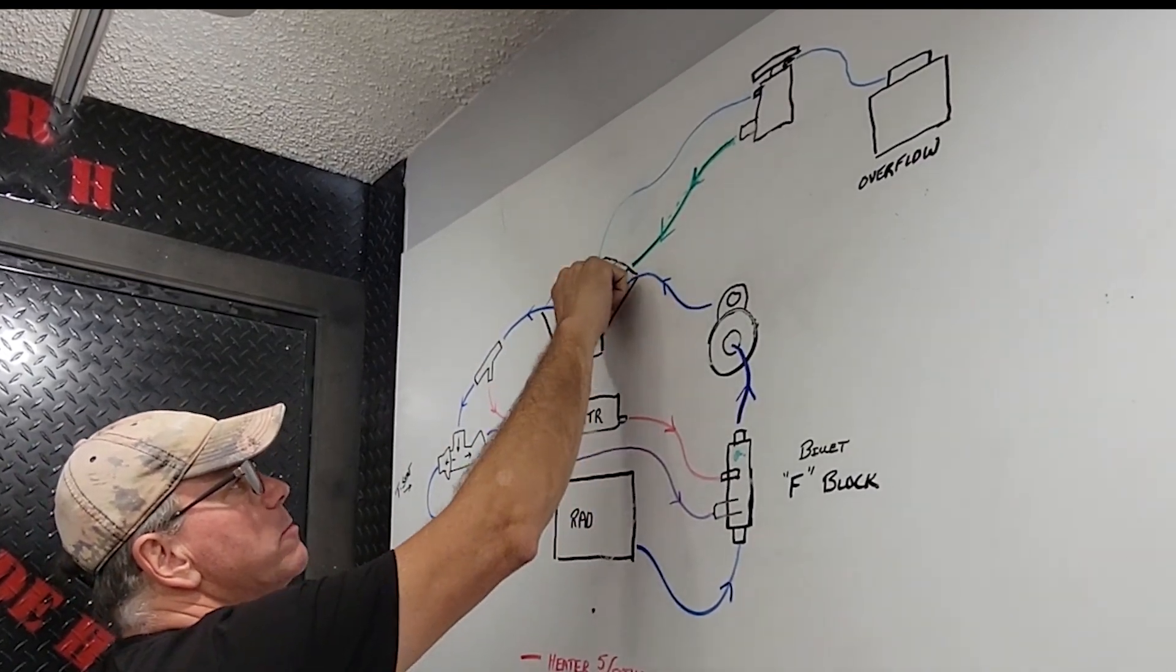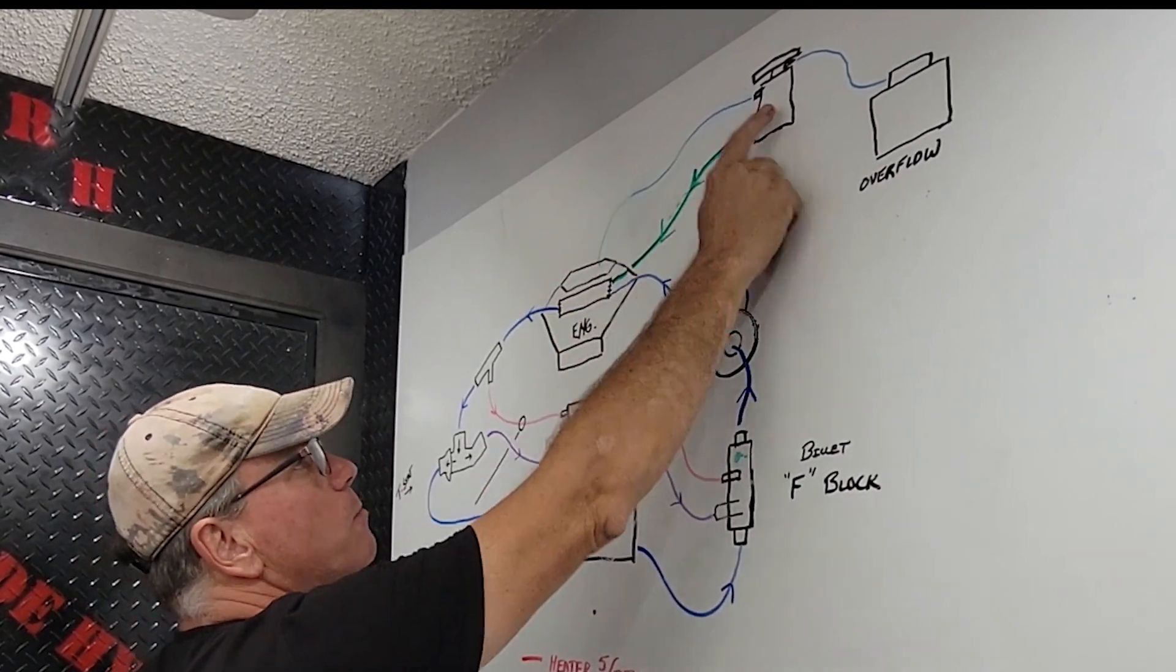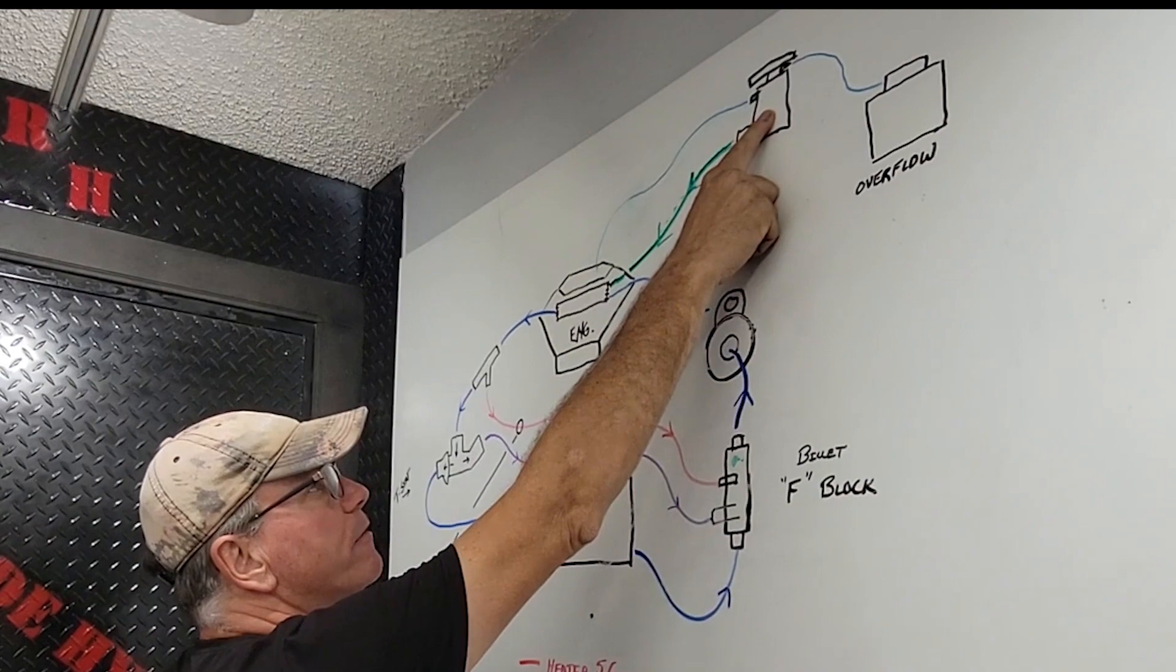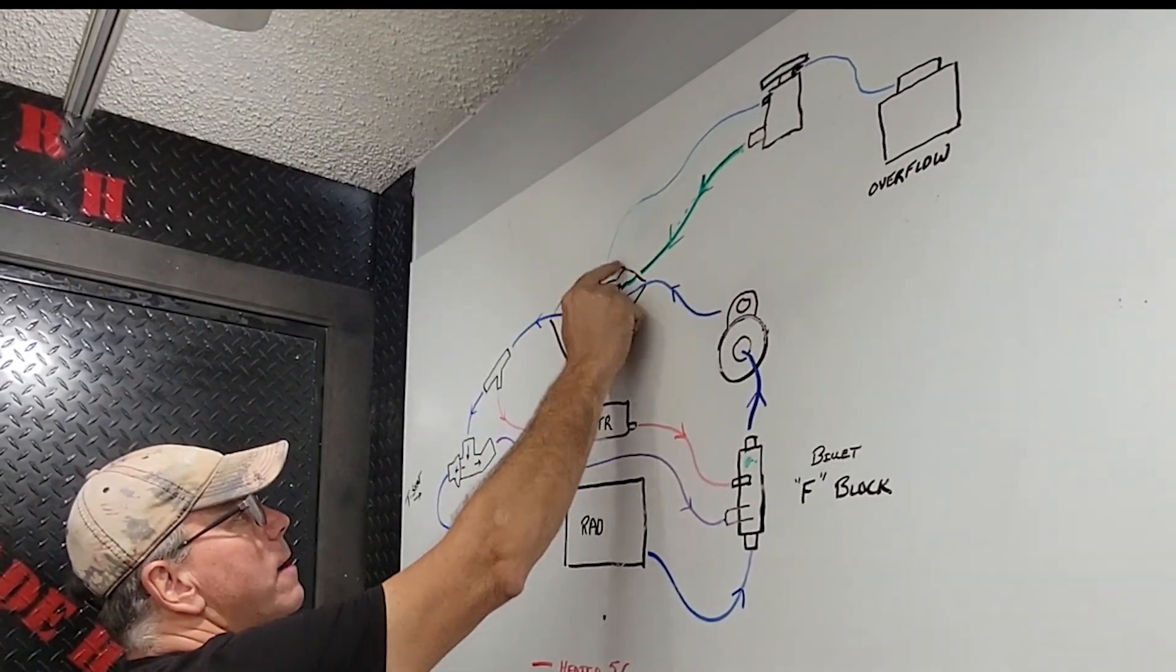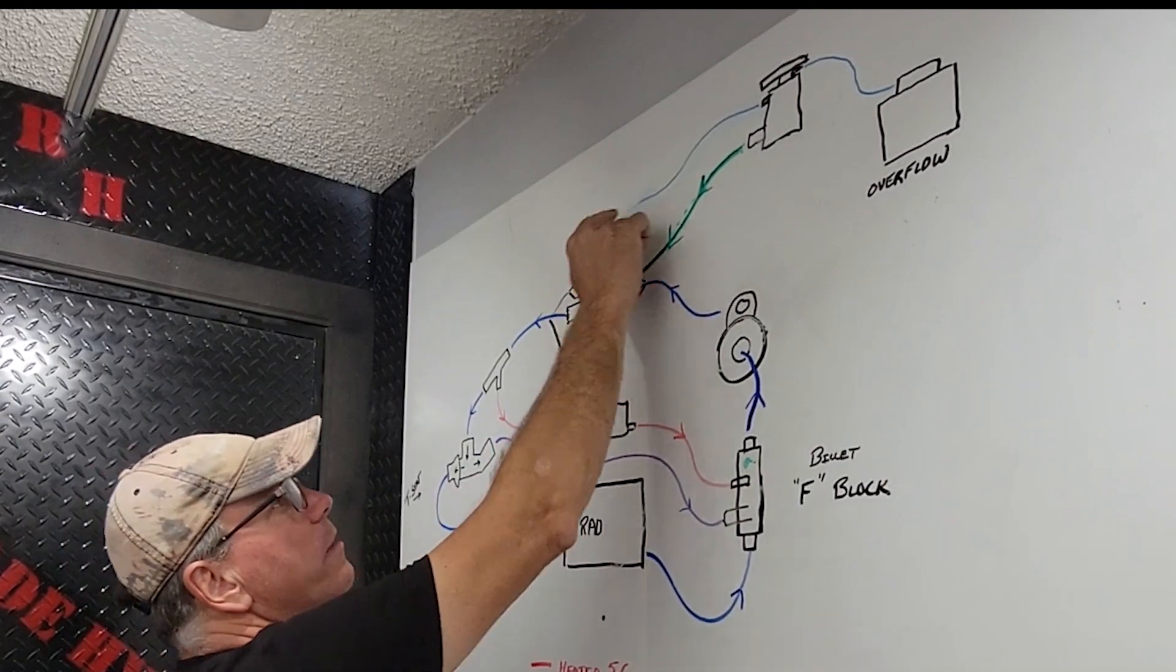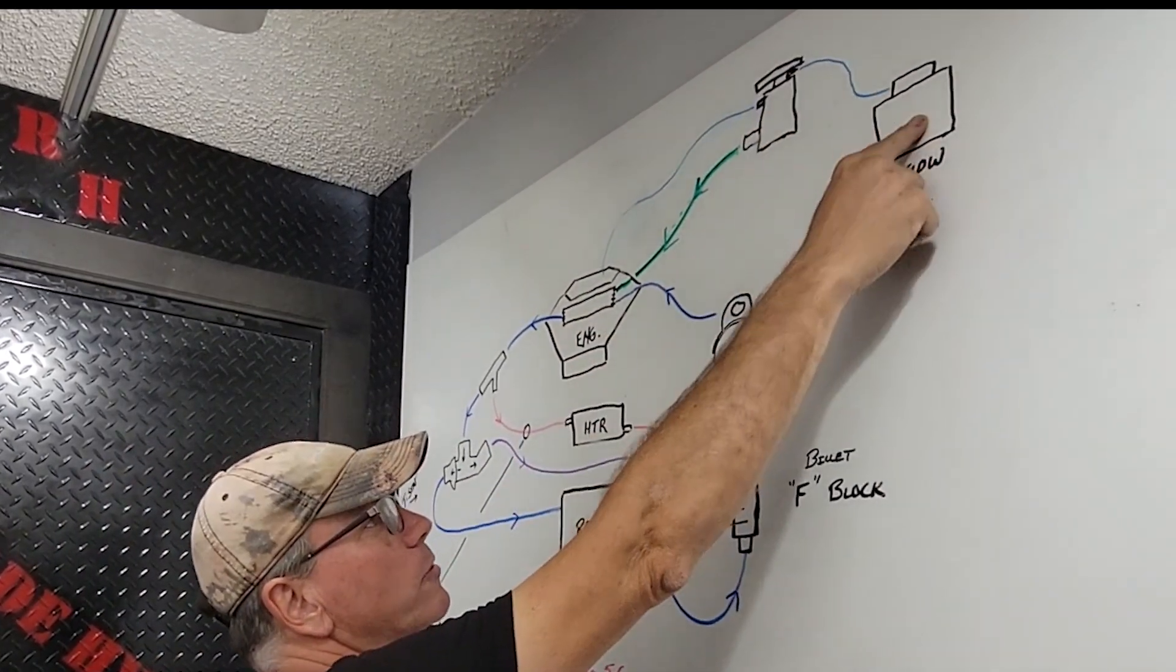The steam tube on the top of the engine will allow air that's trapped up in the top of the engine to go to the highest point. Again, keep in mind, this is the remote filler neck. This needs to be the highest point in the entire system. So any air that's trapped in the top of the engine will then come up and be filled up into here and displaced out through the overflow.